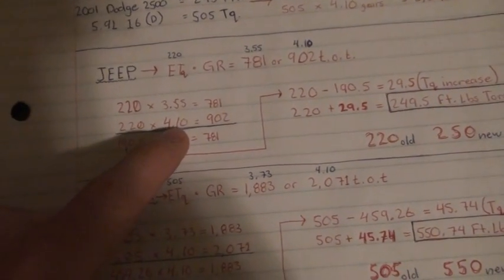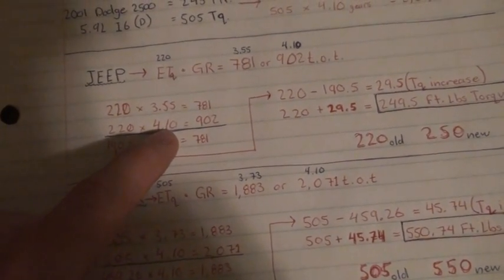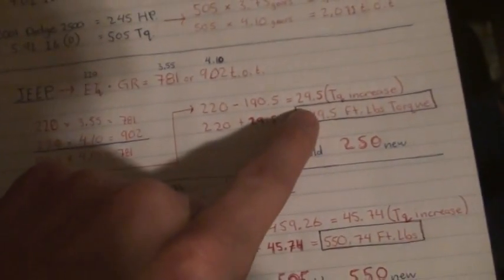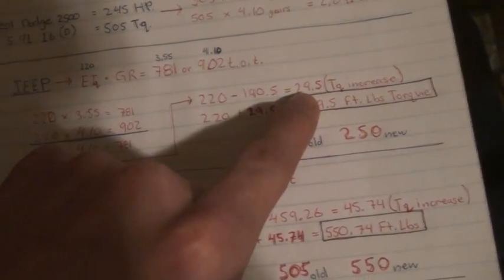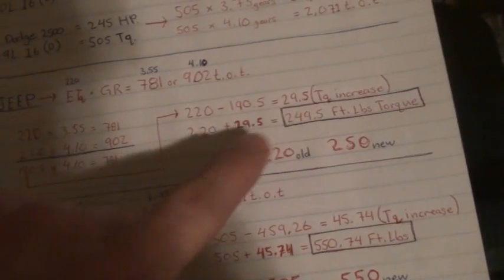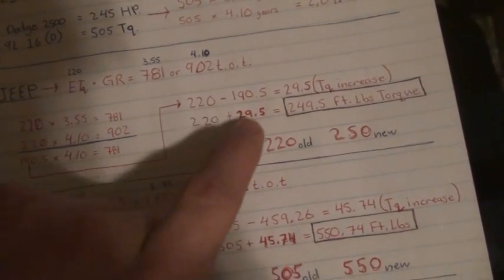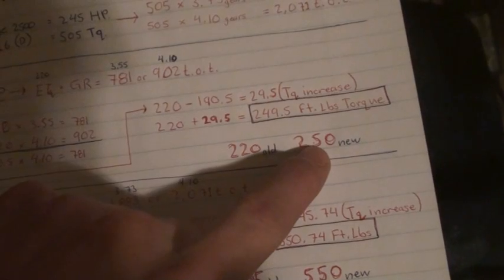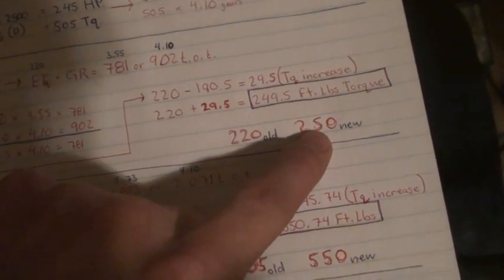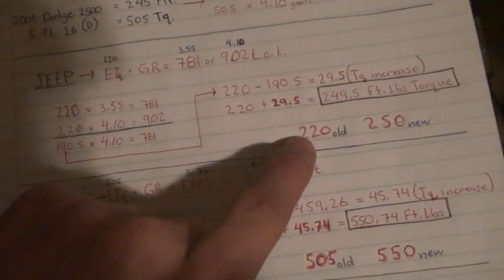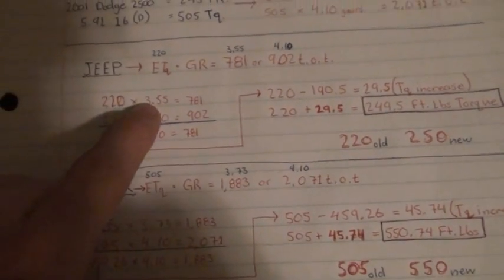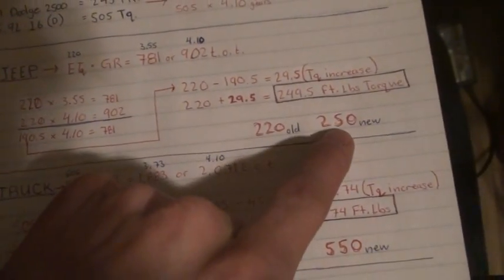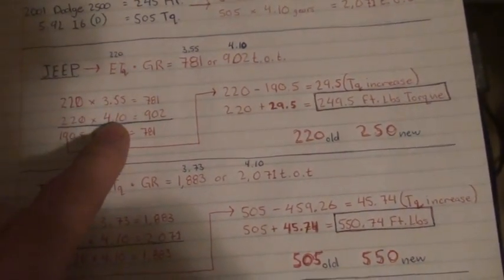See, if you went to say 5.60 gears, your torque increase would be a lot higher, this number. And then what you do is you stick in that number here, so 220 plus 29.5 is 250. So, you've went from 220 foot-pounds of torque with the 3.55 gears, to 250 foot-pounds of torque with the 4.10 gears.